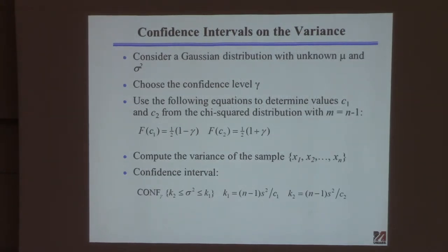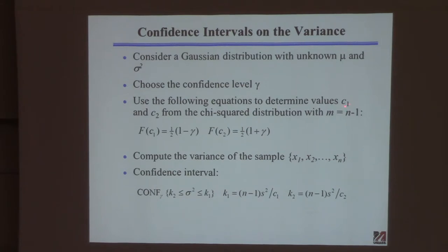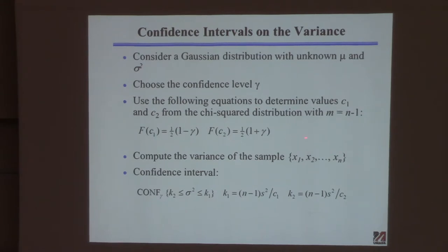Now here's the recipe for computing a confidence interval on the variance. Same kind of idea: assume a normal distribution, don't know mu, don't know sigma, specify a confidence level. Now we use the chi-square distribution instead of the t-distribution. We need to calculate two critical values, c1 and c2. Degrees of freedom is n minus one.